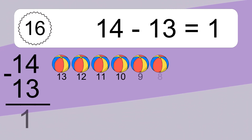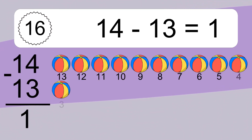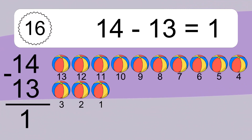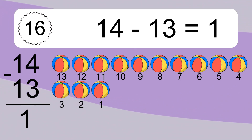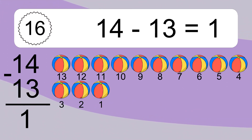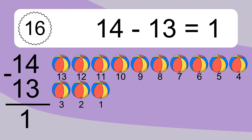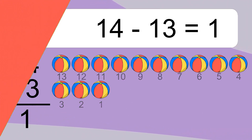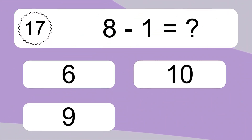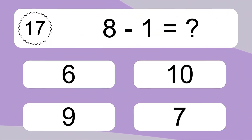14 minus 13 equals 1. Let's count it: 13, 12, 11, 10, 9, 8, 7, 6, 5, 4, 3, 2, 1. 8 minus 1 equals what?